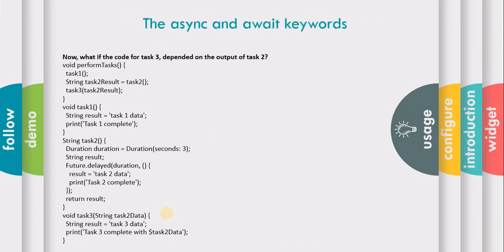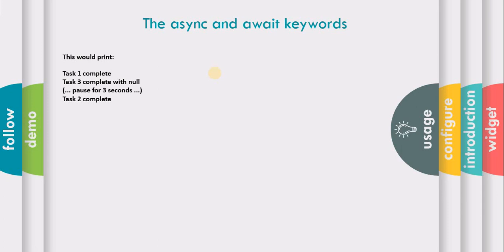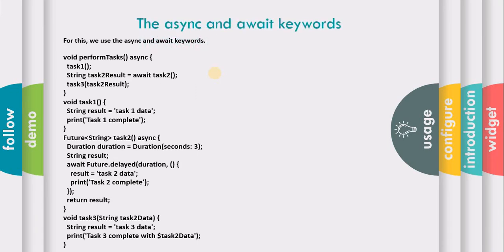Now what if the code for task three is dependent on the output of task two? Since future.delayed is asynchronous, execution continues and task two function returns a null value because the result hasn't been set to task two data yet. That null value is passed to task three, which prints task three complete with null. When task two finally completes it prints task two complete. This is not good because we actually need the result of task two to be used in task three.